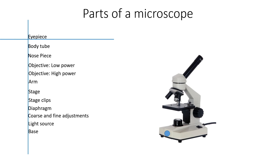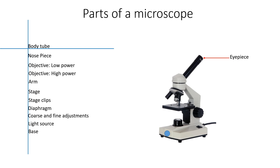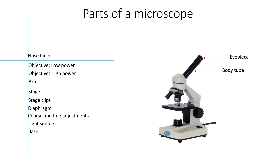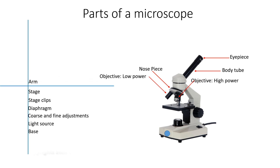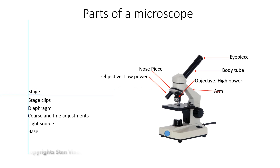These are the parts of the microscope. The eyepiece, body tube, nose piece, the objective lenses — the low power and the high power. The arm of the microscope — this is where you hold the microscope with your hand if you are moving it around.